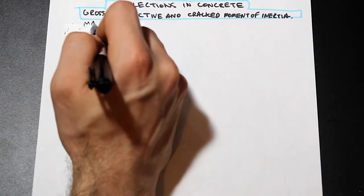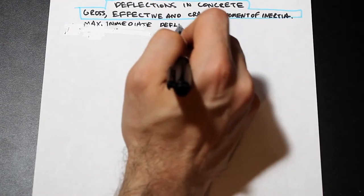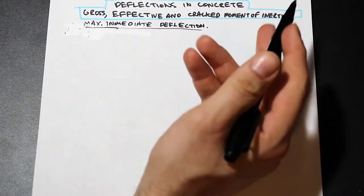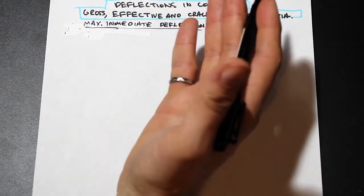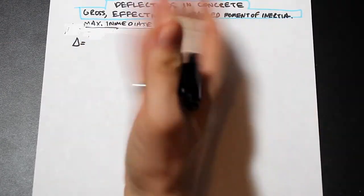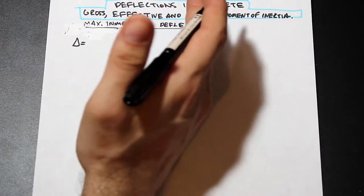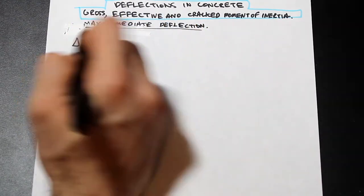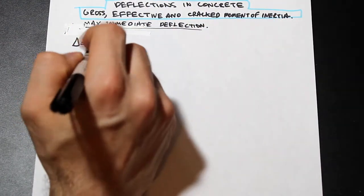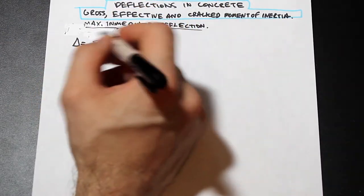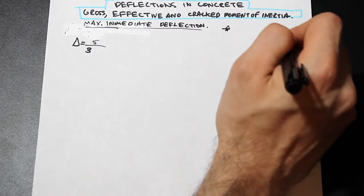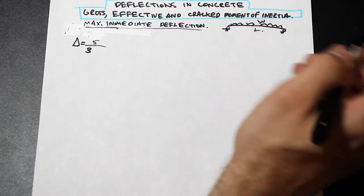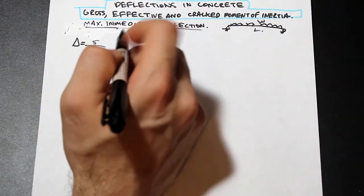Let's talk about the maximum immediate deflection — it doesn't have to be the max, it could be any deflection, but typically we look at the maximum deflections because those are the ones we check against the code. For a simply supported member, you can get the deflection from the codebook. For example, a simply supported beam subjected to a uniformly distributed load w with length L has a deflection given by 5/384 times wL⁴ over EI.